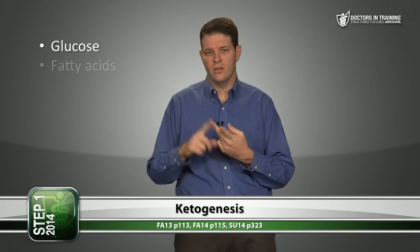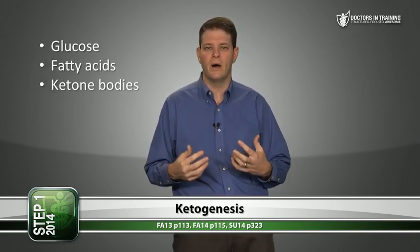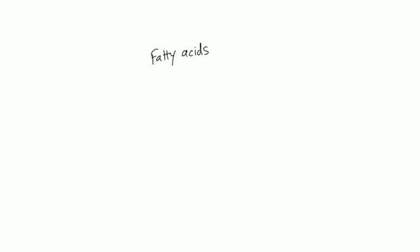Now we're dealing with three main energy substrates: glucose, fatty acids, and ketone bodies. The process of generating ketone bodies is called ketogenesis. In the liver, fatty acids and amino acids are metabolized into acetoacetate, and then NADH can convert acetoacetate into another ketone body called beta-hydroxybutyrate. You need to recognize those two substances as the main ketone bodies — acetoacetate and beta-hydroxybutyrate. Many tissues, like muscle and brain, can use ketone bodies for energy when there isn't enough glucose.